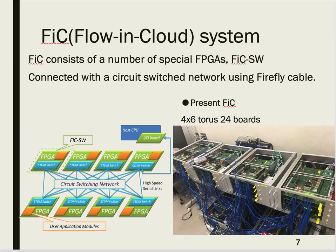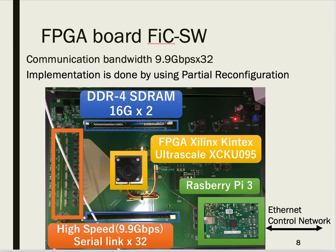The figure on the right shows the present FIC system with 24 FIC-SW boards. The FIC-SW board has a strong feature in communication and switching. It has 32 high-speed CL links, each with 9.9 Gbps bandwidth, and includes a Kintex UltraScale FPGA, two 16GB DRAMs, and a Raspberry Pi 3. The FPGA configuration bit file is sent by the Raspberry Pi, and the switching module can change the destination through serial links.